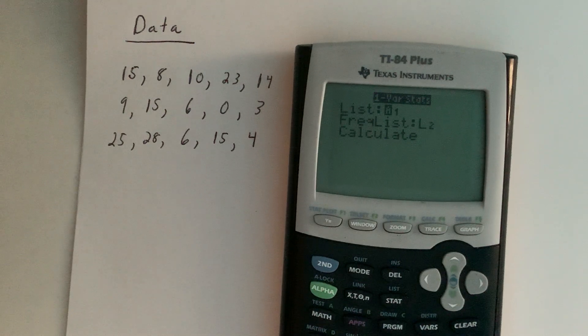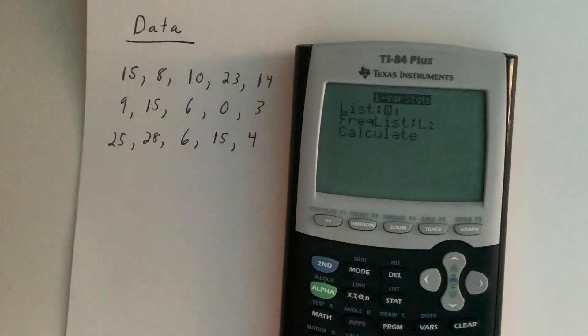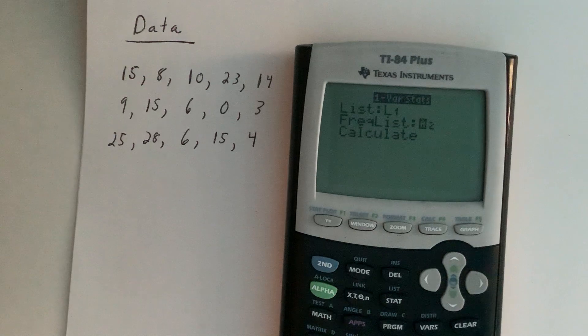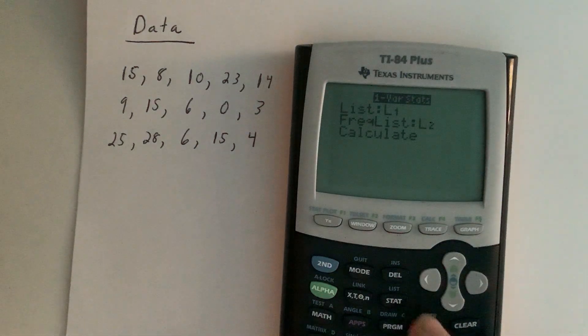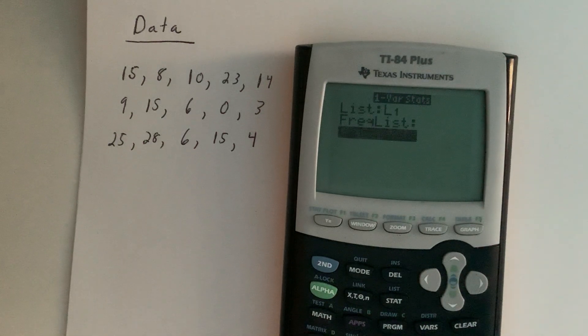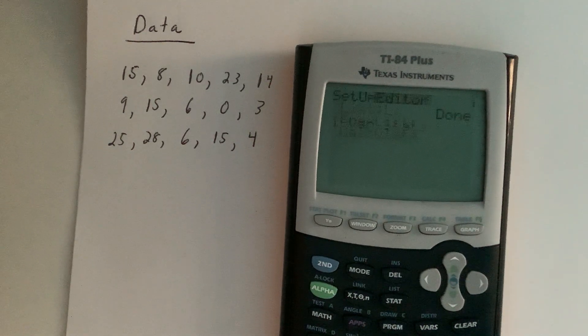Since our cursor is already on there, all we have to do is hit enter, and we're brought to this menu here. If you have a slightly older calculator, you won't get this menu, and all you'll need to do is hit enter again. If you have a newer calculator, it does prompt you with this menu to ask you which list do you want to use. We put our data in L1, so it is correct that we want L1 there. Make sure that it's blank next to your frequency list. We can go to calculate and hit enter.